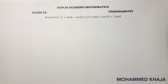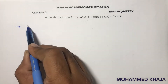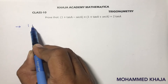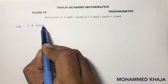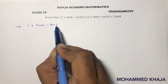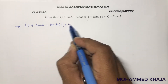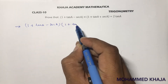Prove that (1 + tan a - sec a)(1 + tan a + sec a) = 2 tan a. Taking the LHS as (1 + tan a - sec a)(1 + tan a + sec a).